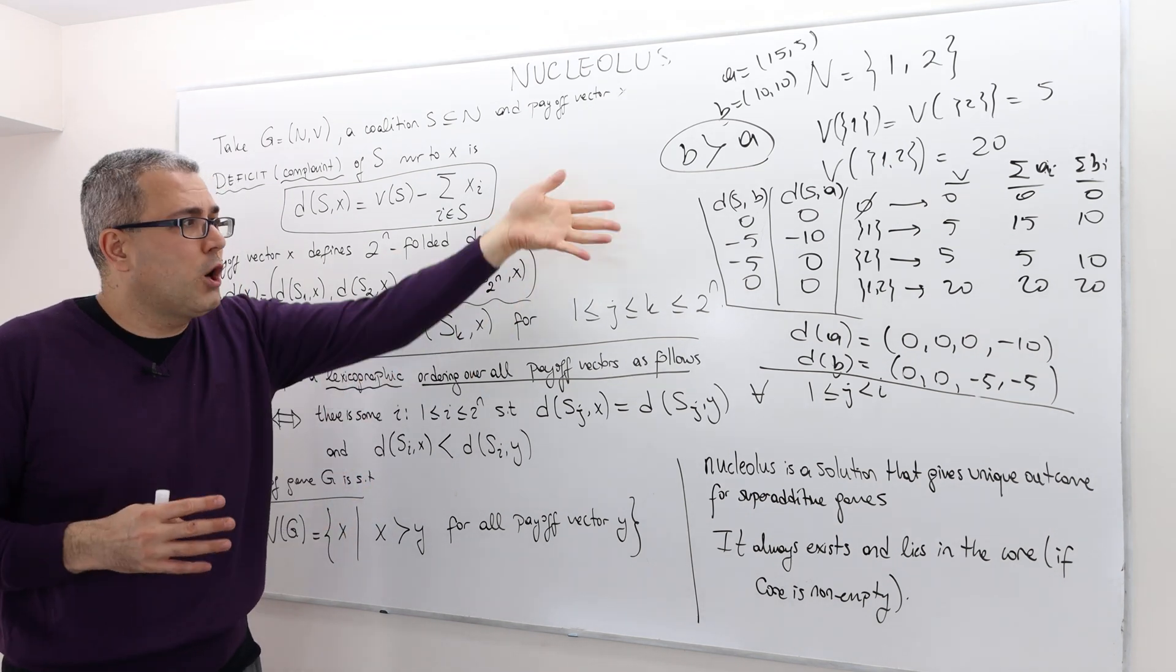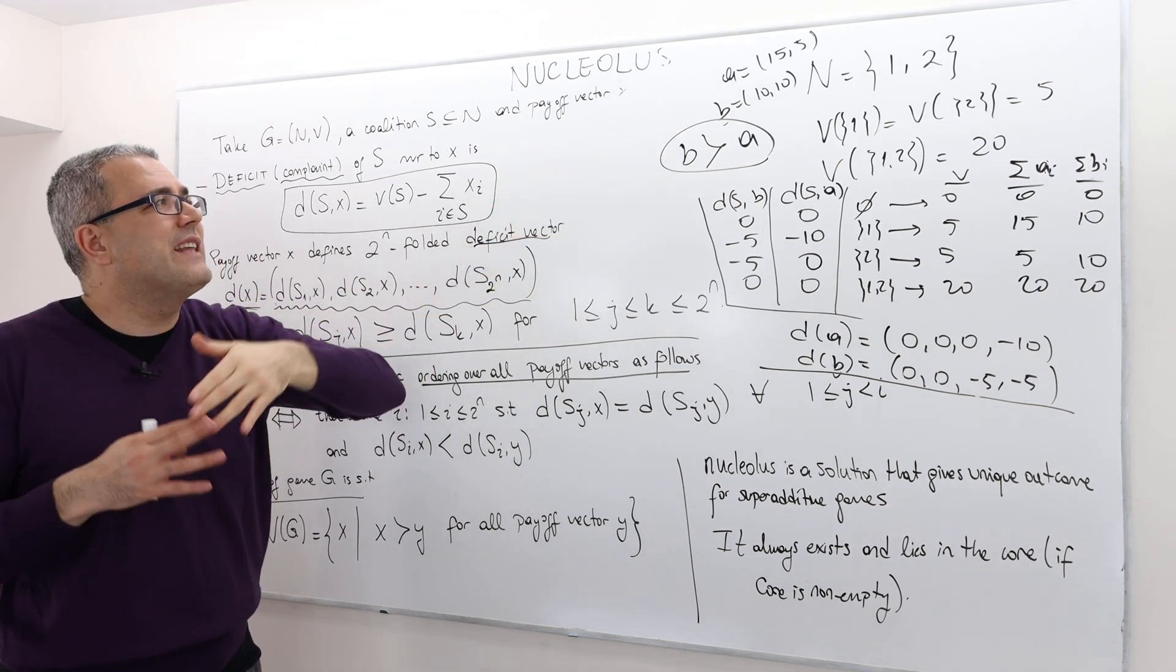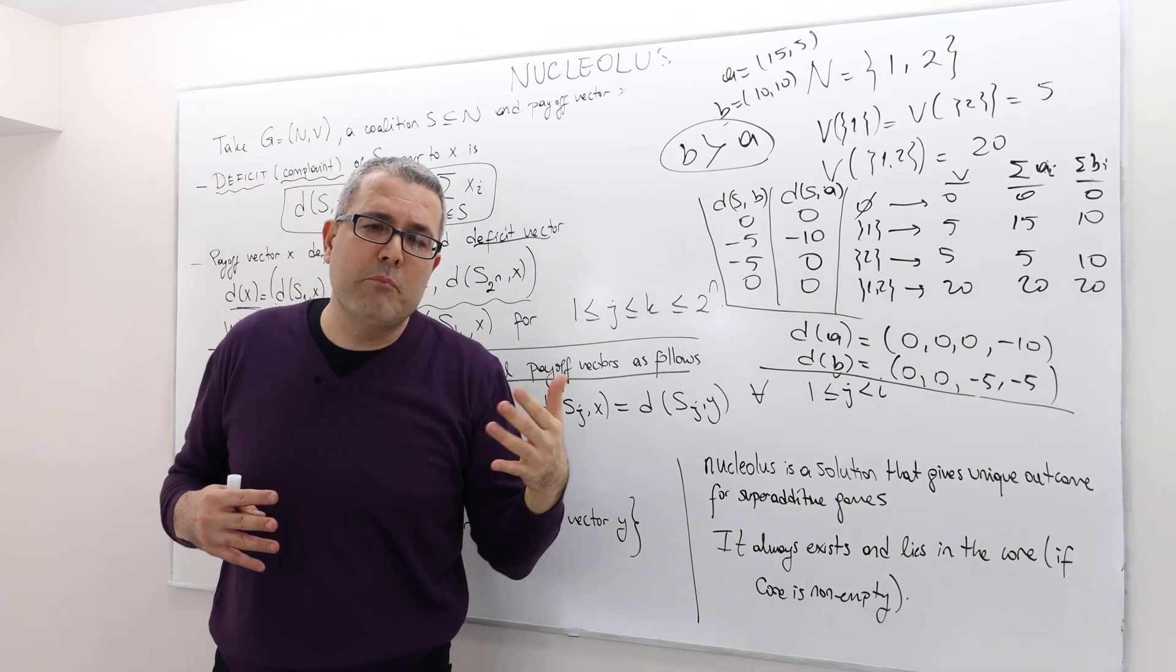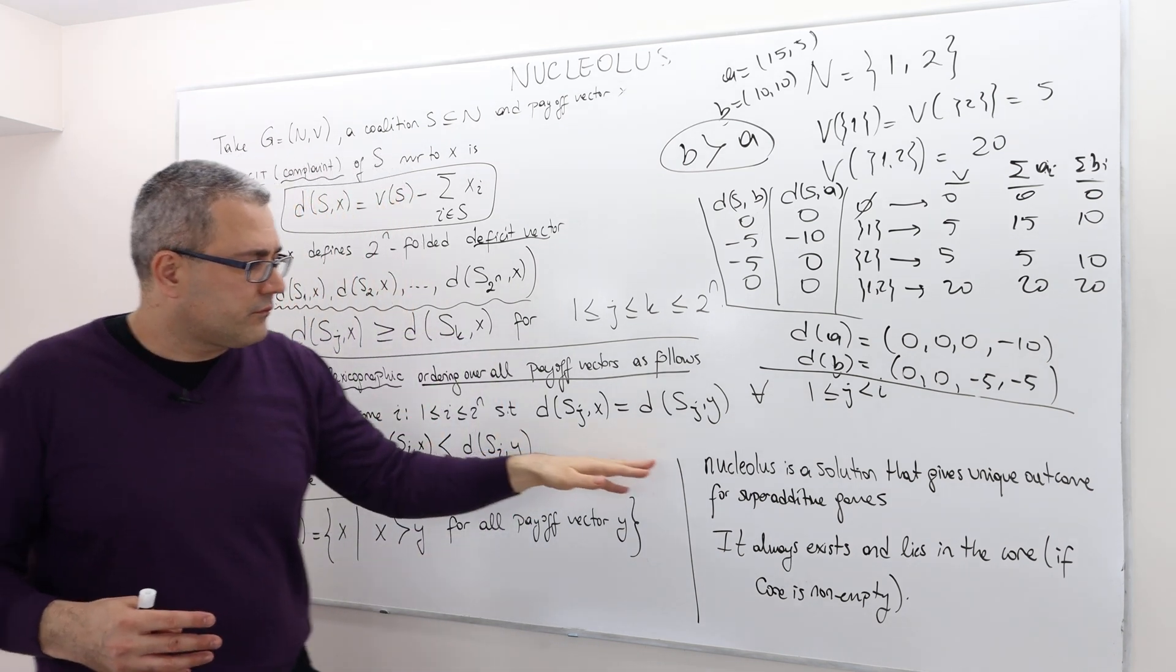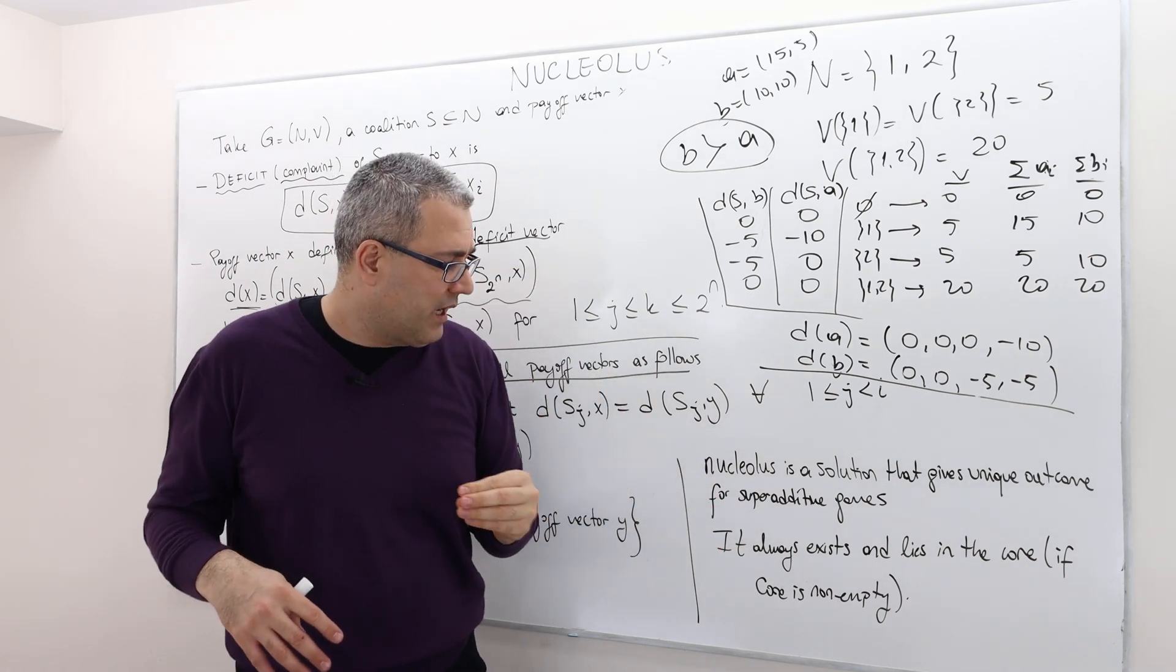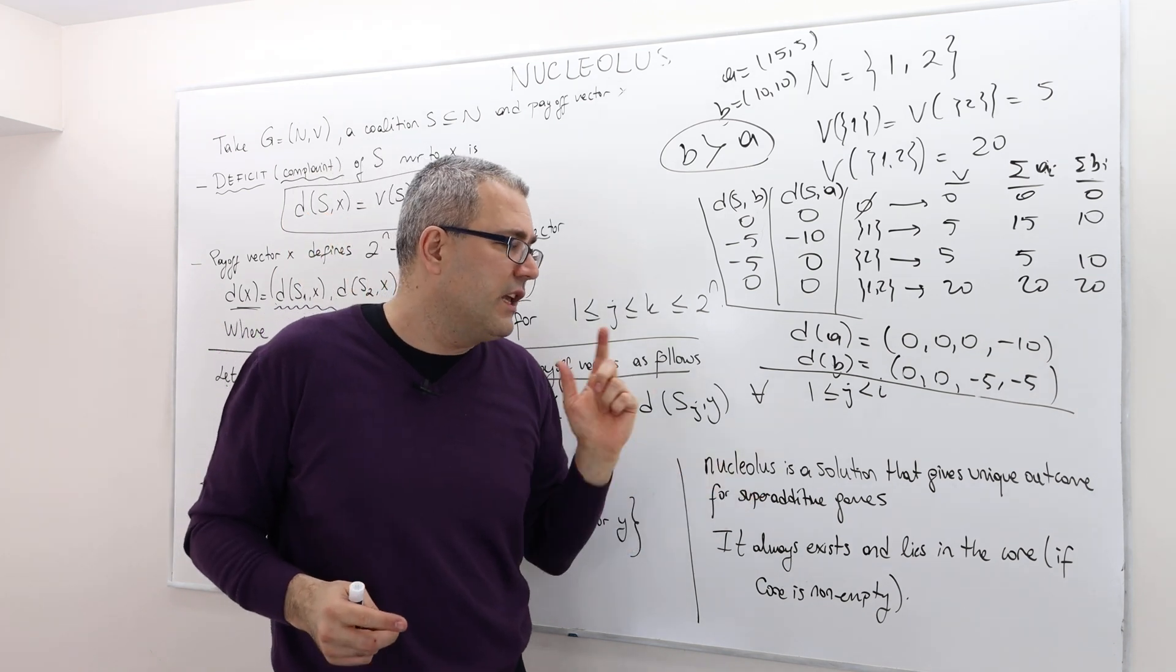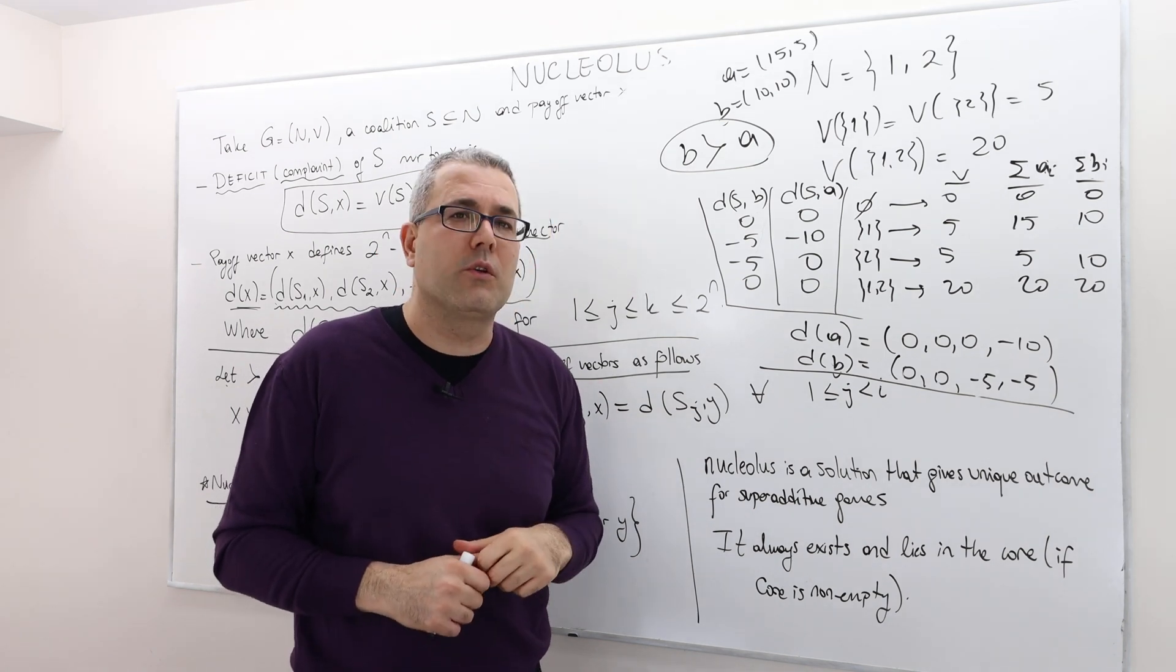So that means, according to this description or definition, a is definitely not in the nucleus. So I don't know if there is any payoff vector in the nucleus, whether it is b or not. But all I can conclude here, at least, is that a is definitely not in the nucleus. And the nucleus is a nice solution concept, because once again, its idea is to minimize the highest possible complaint.